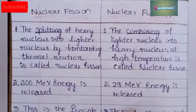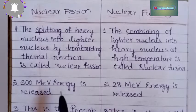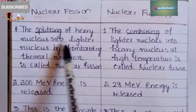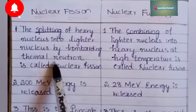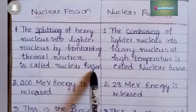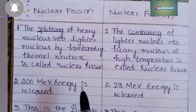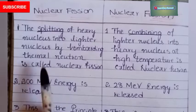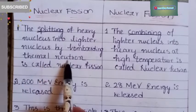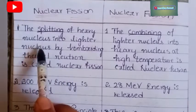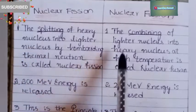So maximum you can score 4 out of 4. The definition: the splitting of a heavy nucleus into lighter nuclei by bombarding with thermal neutrons is called nuclear fission. This is the process used in nuclear reactors, where a heavy nucleus is split into lighter nuclei using thermal neutrons.